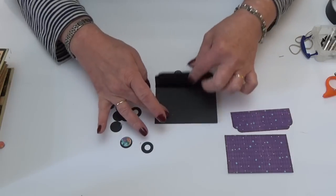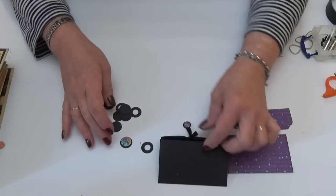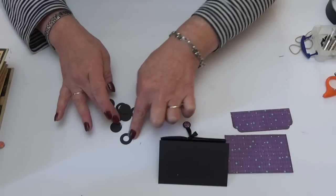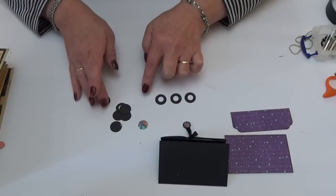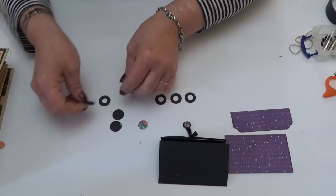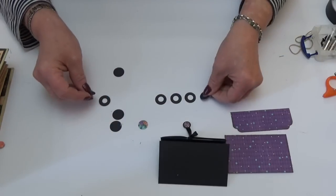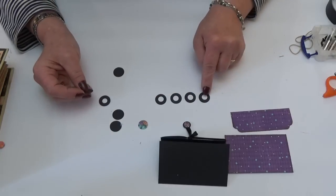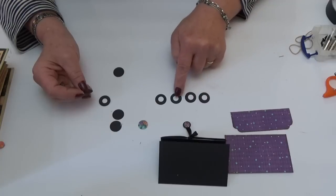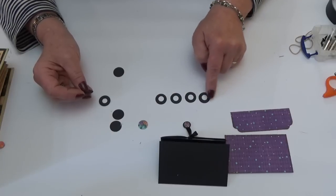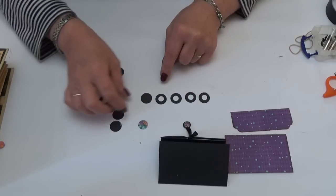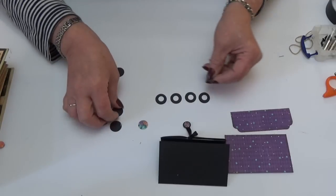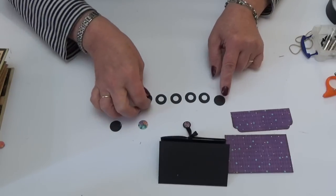Then I've used a three-quarter of an inch punch and a quarter inch punch to make some circles. So I've made four washers by punching out the quarter inch circle first and then punching the three-quarter inch circle around it. And then there are two full three-quarter inch circles that go with each set.